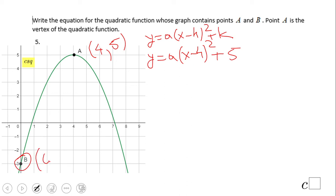So what do we get here? -3 equals a(0 - 4)² + 5. -3 equals a times (-4)² + 5. So -3 equals 16a + 5.